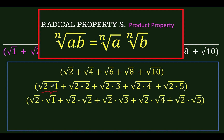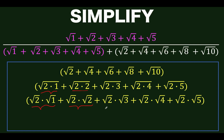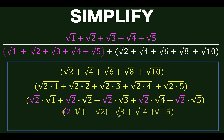So square root of 2 times 1 is now square root of 2 times square root of 1, and the same applies for the rest — each term is now expressed as two radicals. This is the application of the product property of radicals for all five terms.